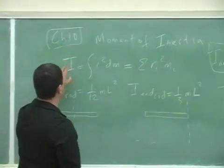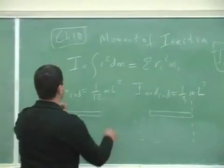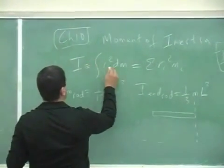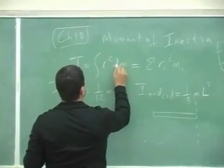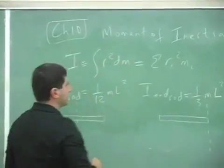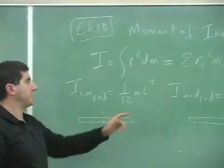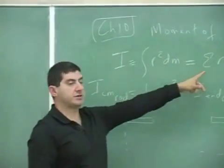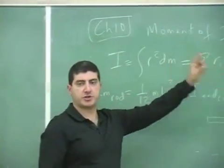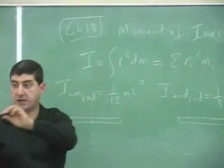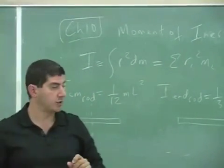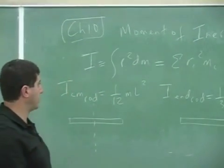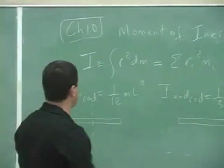Stuff that we had last time: this is the definition of moment of inertia, the integral of r squared dm. And then if you want to find the moment of inertia of a bunch of objects and sum them up, you do m sub i times r sub i squared.